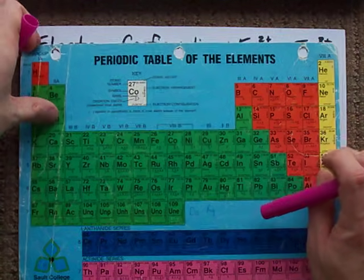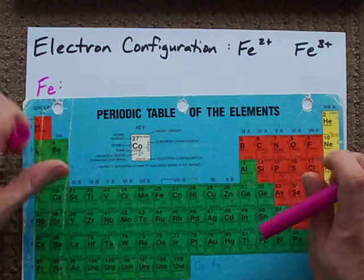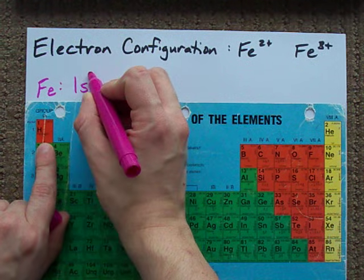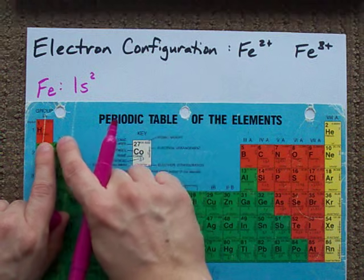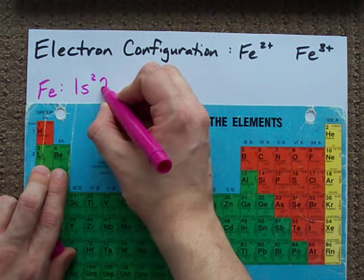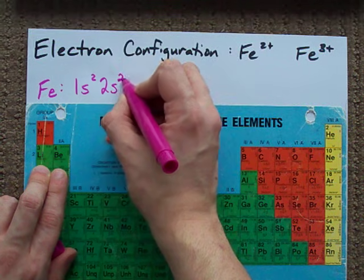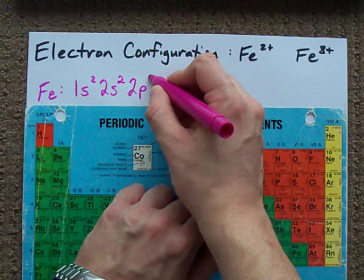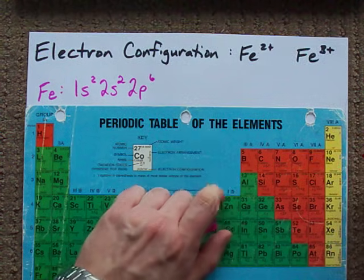The electron configuration for iron starts with 1s2 for the two electrons in the first S block. Going down to the second row, we have a 2s which holds two electrons. We have a 2p which holds six electrons. Notice that the P block is six wide.